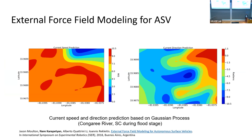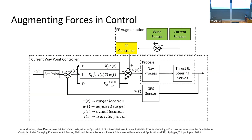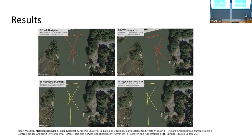We collected water current and wind data and approximated them for regions of interest using Gaussian processes. One approach is to assume changes are not significant and use that data to augment the controller or waypoints for the next trials. Another approach is to use those readings directly with supervised learning to estimate the deviation from the ideal waypoint to what is actually being executed. Augmenting this information into the controller enables straighter paths — shown by comparing paths without (red) and with the augmented controller.